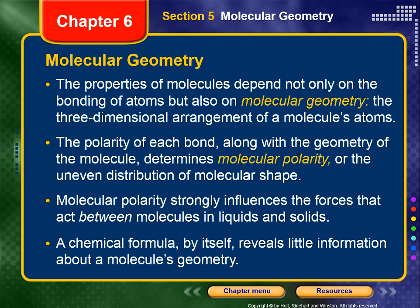The properties of molecules depend not only on the bonding of the atoms, but also on the molecular geometry, which is the three-dimensional arrangement of a molecule's atoms. The polarity of each bond, along with the geometry of the molecule, determines its molecular polarity, or the uneven distribution of molecular shape. We're going to try to connect polarity to an uneven distribution, specifically of electrons.